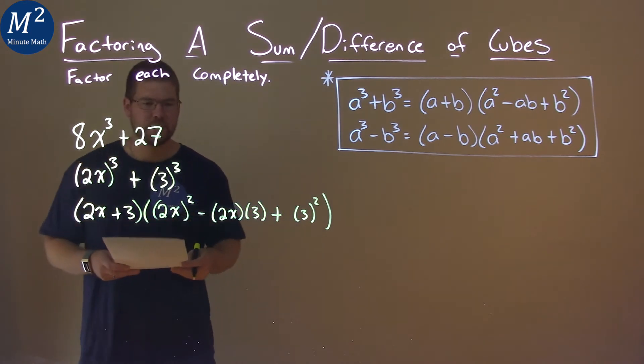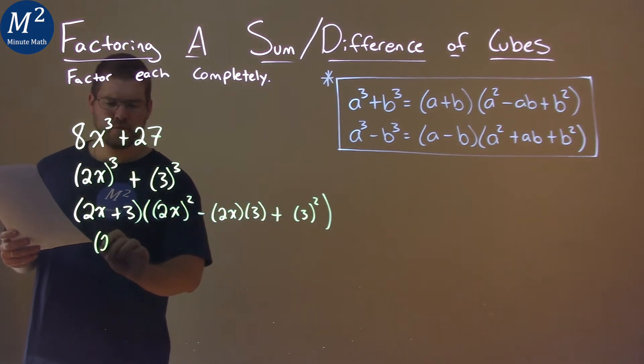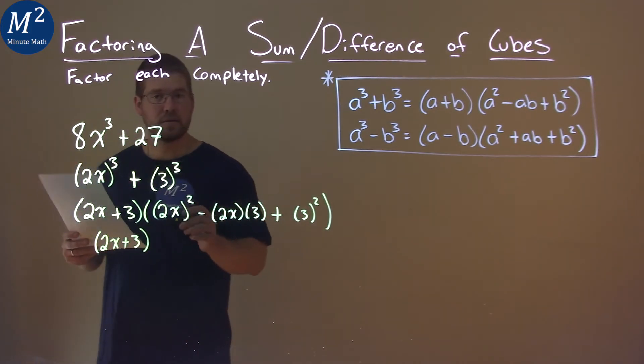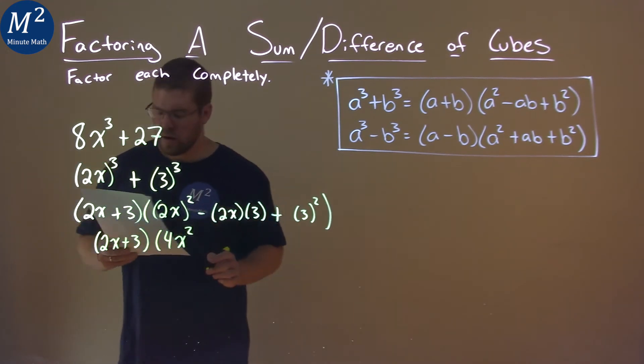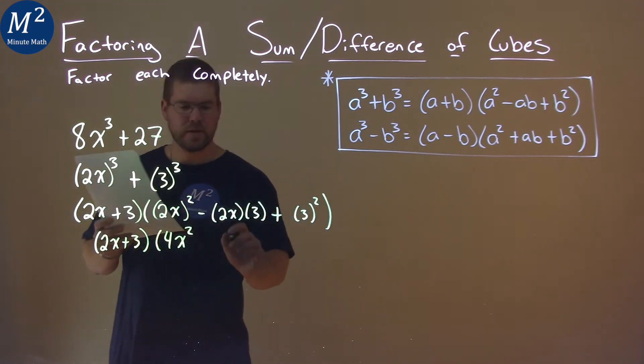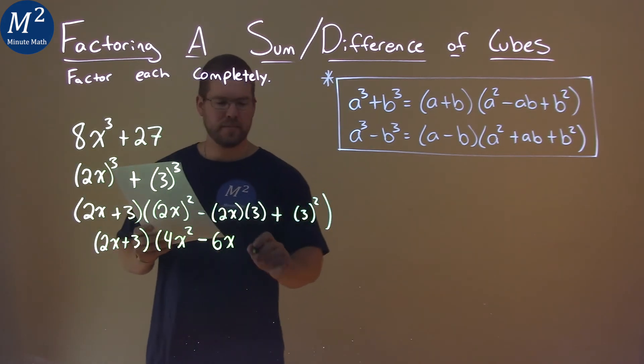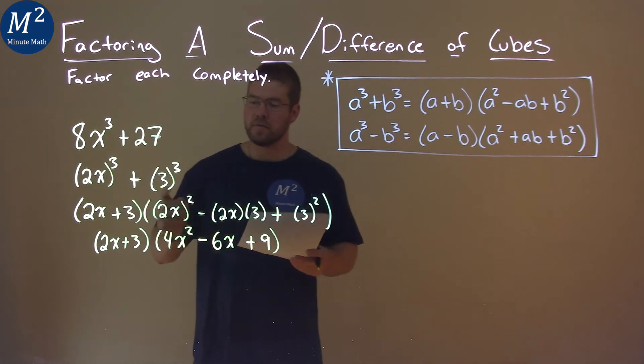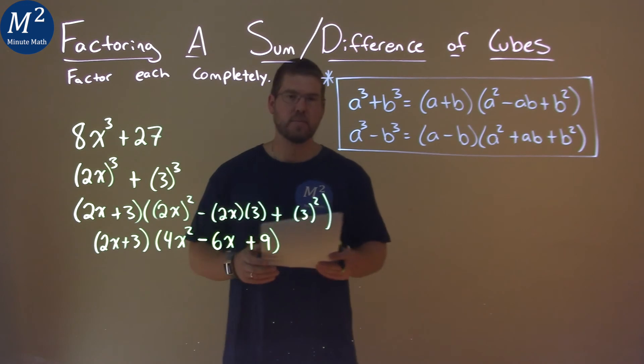And now we have to simplify this. Well 2x plus 3 doesn't simplify anymore. 2x squared comes out to be 4x squared. 2x times 3 will be 6x. Don't forget the subtraction. And then 3 squared is 9. And so our final answer here is 2x plus 3 times 4x squared minus 6x plus 9.